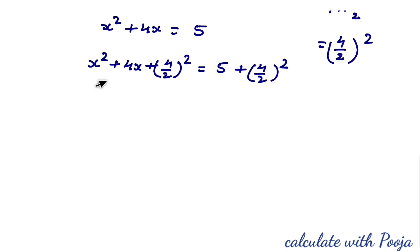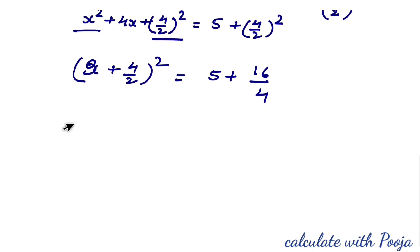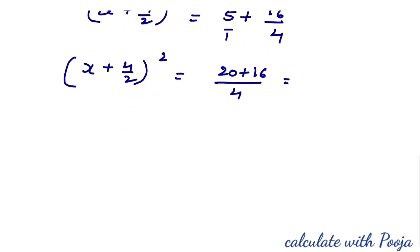The left side is now a perfect square: (x + 4/2)² = (x + 2)². On the right side: 5 + (4/2)² = 5 + 4 = 9. But continuing: 5 + 16/4 = 5 + 4 = 9. Actually simplifying: x + 2 whole square = 5 + 4 = 9, so square root of 9 = 3; or as shown, √(36/4) = 6/2 = 3.